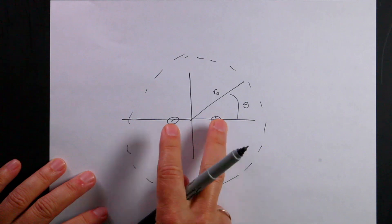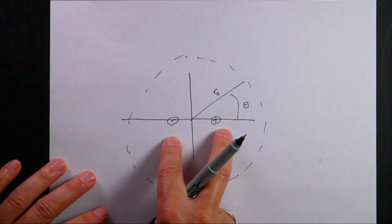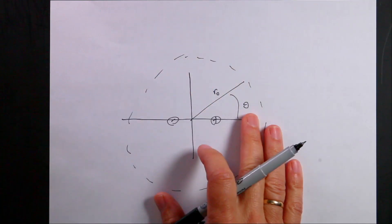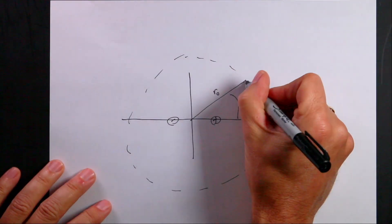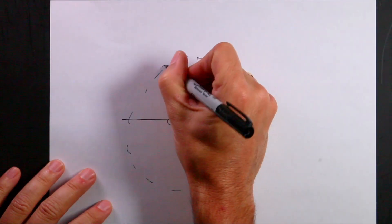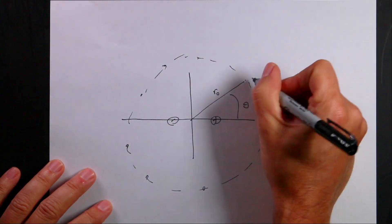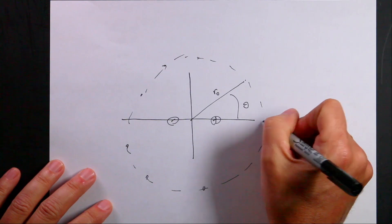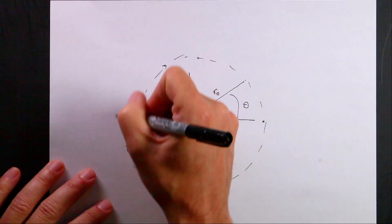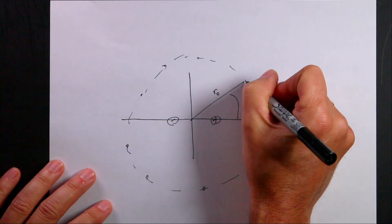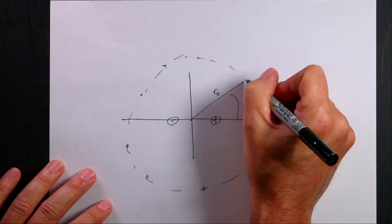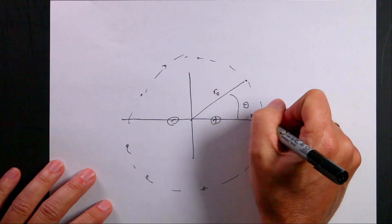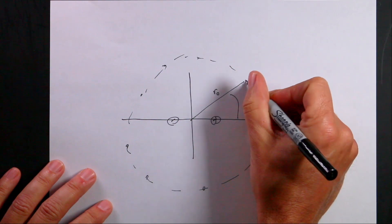So suppose I have a dipole — a positive and a negative charge right here — and I want to display the electric field at this region. I've already done this for a single point, but now what if I want to do it at a bunch of points around here? So what I'm going to do is start with some value of R and just move around in a circle, and then for each of those locations I can calculate the electric field.